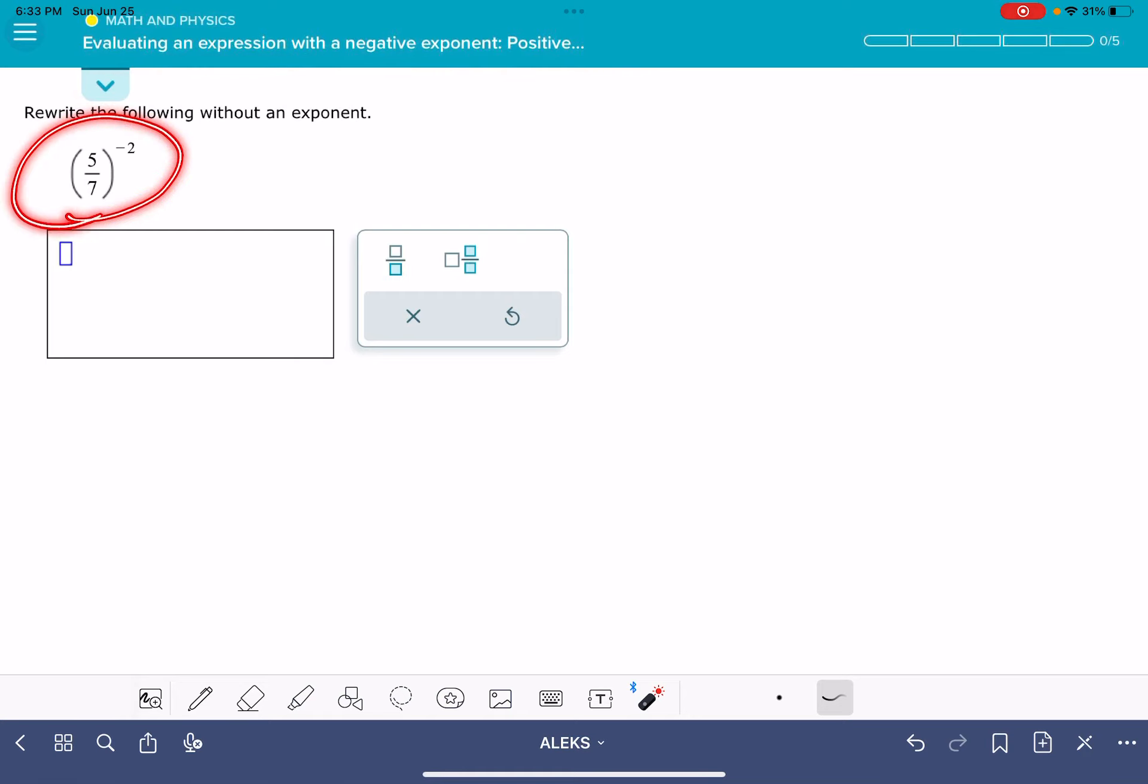This problem is going to give you a fraction that has a negative exponent, and it wants you to rewrite it without any exponent at all. And to solve this problem, we're going to be using a couple of rules of exponents.